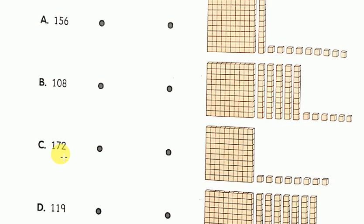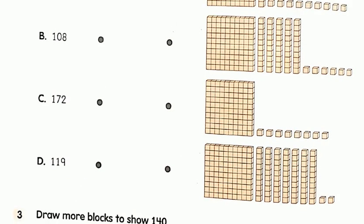Now go to the third one, C: 172. The number 172 is a three-digit number having 1 hundred block, 7 tens blocks and 2 ones cubes. This number 172 matches with this picture exactly — you can see 1 hundred block, 7 tens blocks and 2 ones small cubes. So match 172 here.